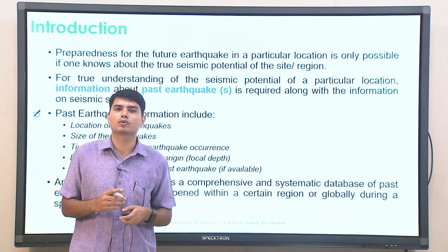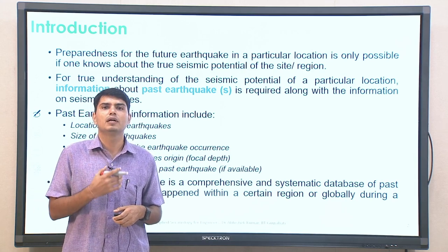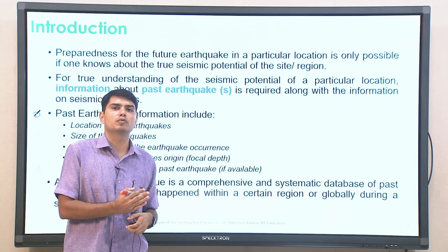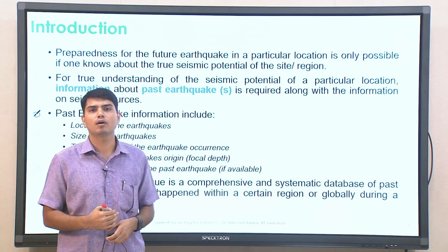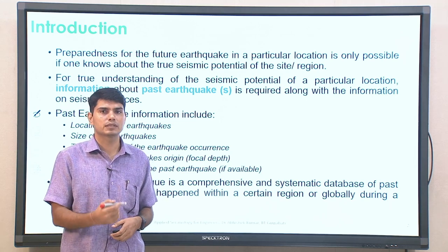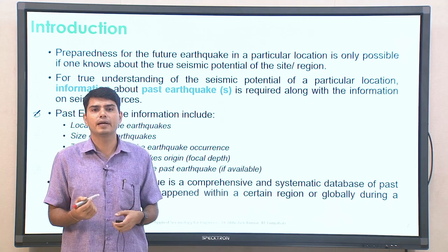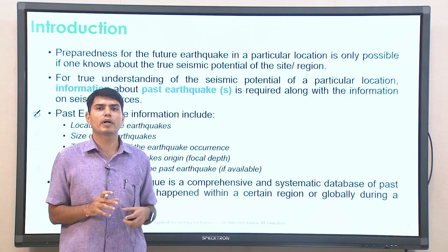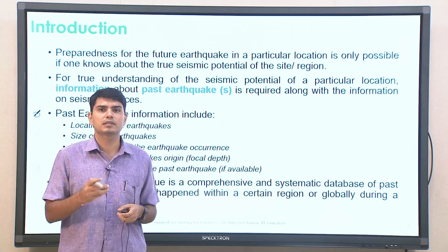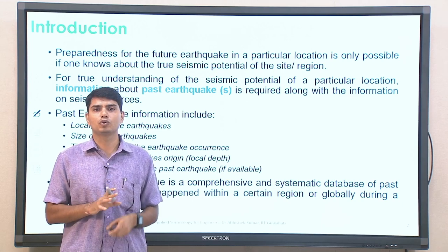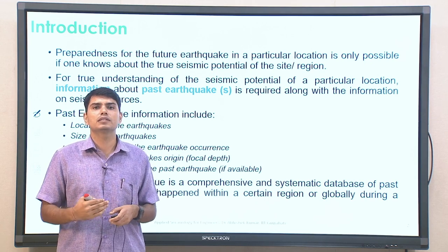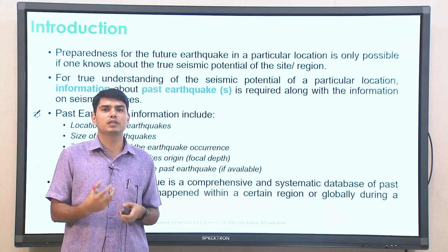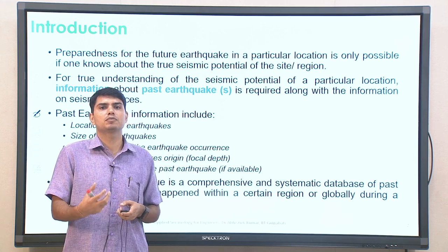Any earthquake catalog means we are trying to develop a comprehensive, systematic database of earthquakes which have happened in the past compared to the present. It should cover all information including location, size, focal depth, focal mechanism, and when it happened. If some information is not there, we try to get the other information so that whatever events have happened in the past, I should have complete information about those events. Once I start analyzing those events, I will get more interpretation about the true seismic potential and accurate seismic activity of a particular region.